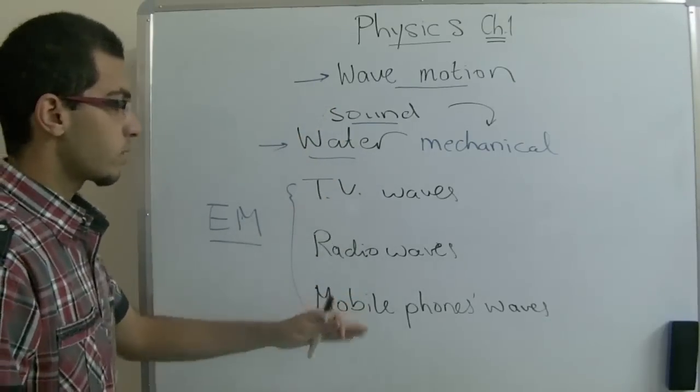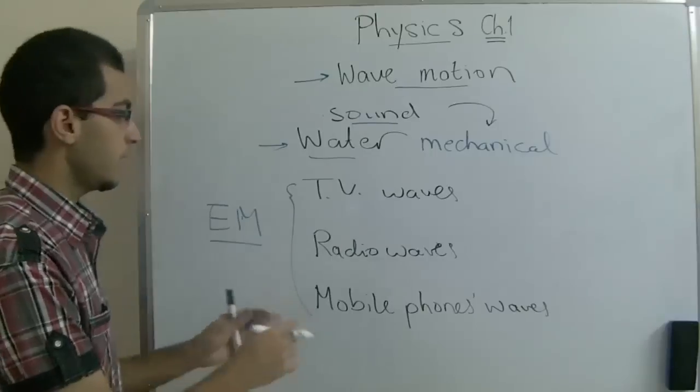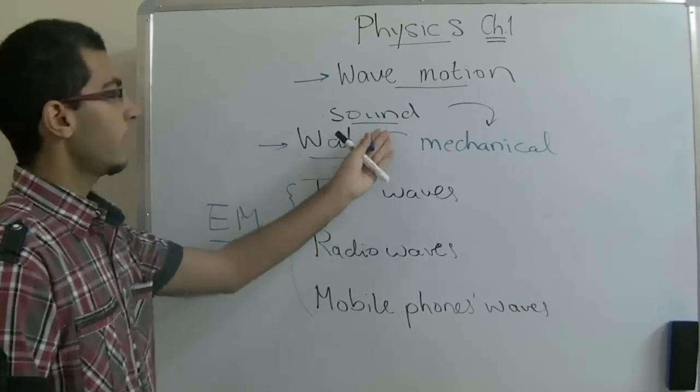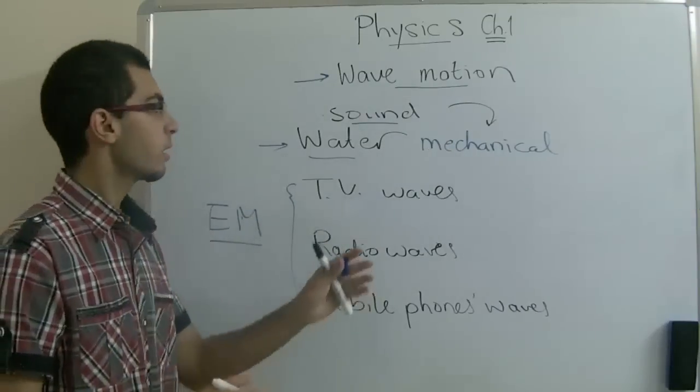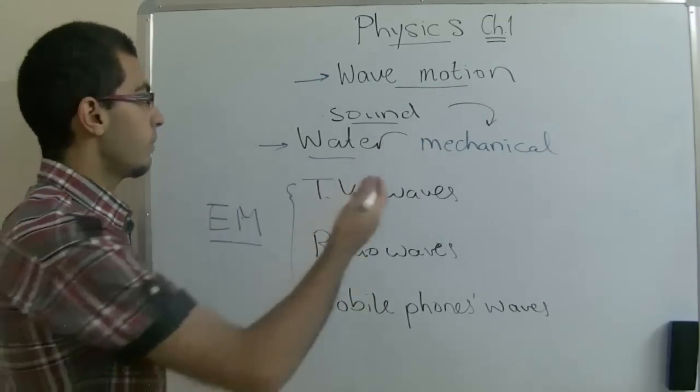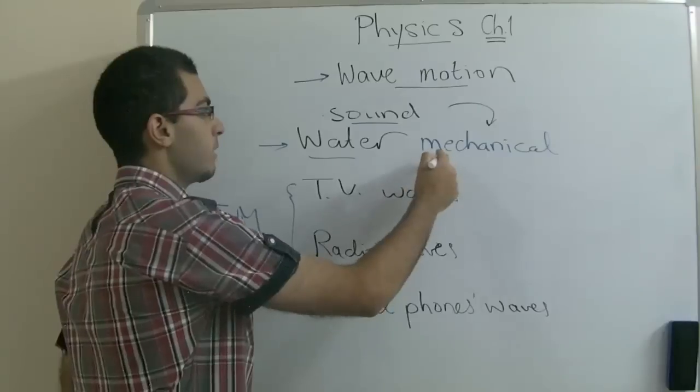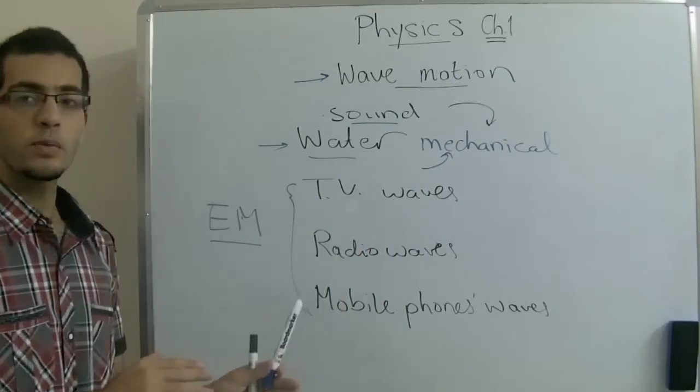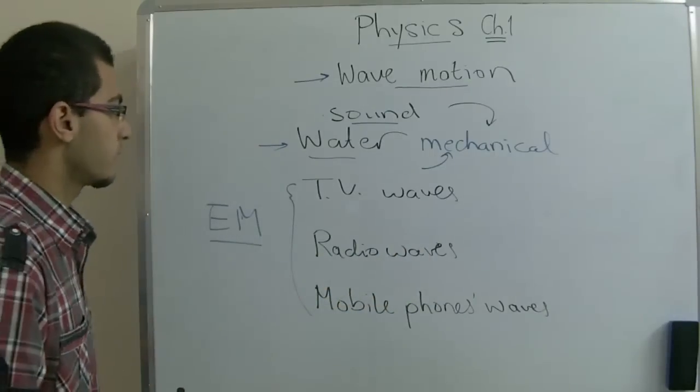These waves can travel through space. They don't need a medium to travel through. While sound waves need a medium like air and other mechanical waves need a medium like water to spread through. This is the difference between mechanical waves and electromagnetic waves.